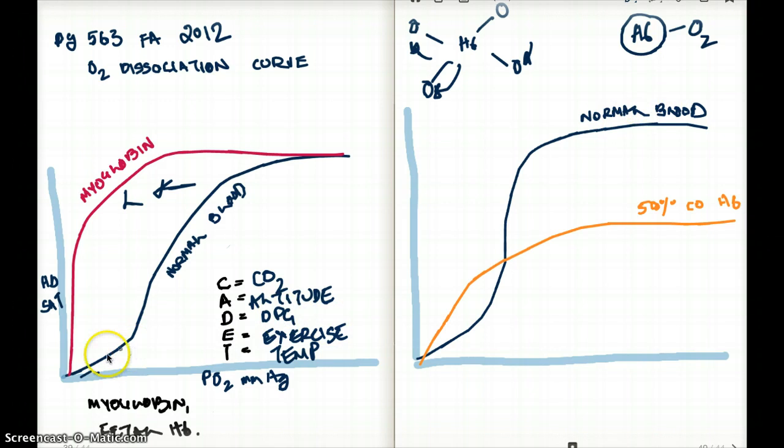So sometimes this normal curve shifts right or shifts left. So what are the factors that cause this curve to shift right? I use the mnemonic CADET. I like this mnemonic more than the other ones. So C is going to be for carbon dioxide, A is going to be for altitude or acid, D is going to be for DPG or 2,3-DPG, E is going to be for exercise, T is going to be for temperature. So now this begs the question, why does the curve shift to the right when these factors are present? Why not to the left? That's because when these factors happen, there is less affinity of oxygen binding.